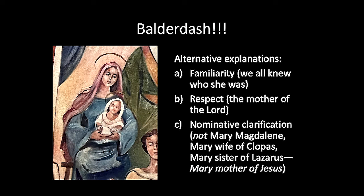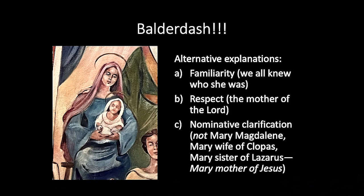Alternative explanations for the non-named mother of Jesus: A — familiarity. We all knew her. Did anyone doubt that Mary was the mother of Jesus? Everybody knows that. B — highly respected; maybe the relationship with the Lord is the important thing, a veneration kind of elevation. C — nominative clarification. There's a bunch of Marys in the narrative: Mary Magdalene, Mary wife of Clopas, Mary sister of Lazarus, and Mary the mother of Jesus. So you have to qualify it anyway. Now we take those three bases and apply them to the beloved disciple.